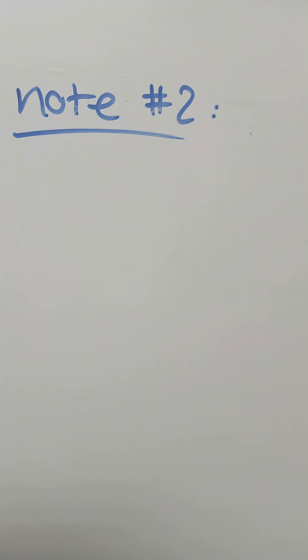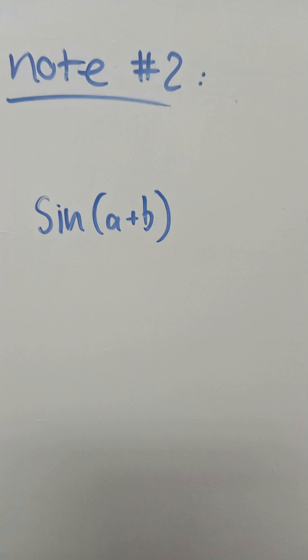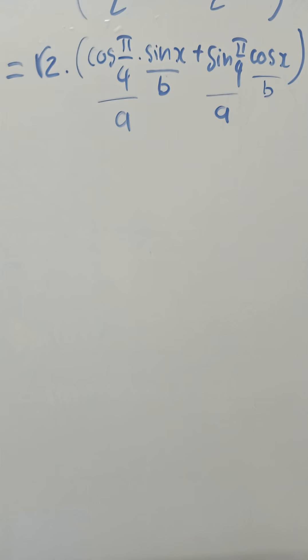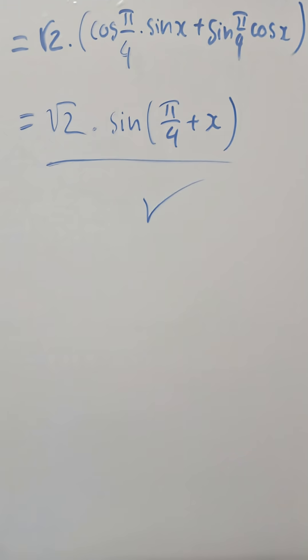Here, remember the basic angle sum identity as you can see on the video. Take pi over 4 as A and x as B. We will get the correct answer.